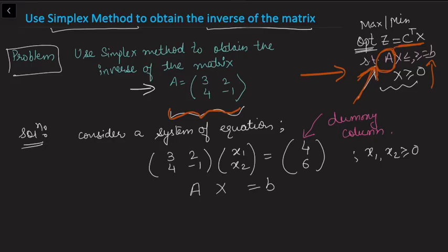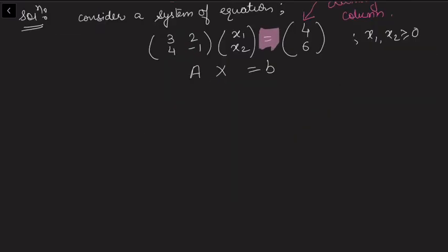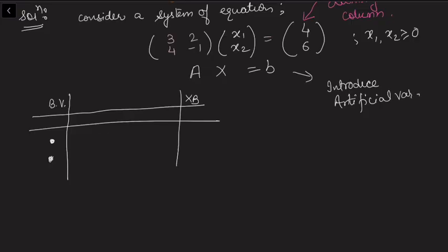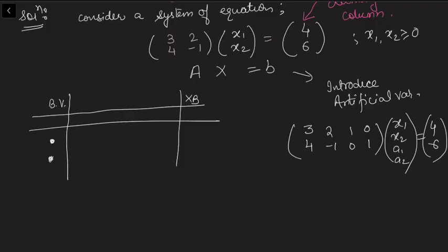We now have a system Ax = b as a constraint, and we know we can apply the simplex method to it. Notice that with an equality constraint, the associated matrix does not have a ready identity column. To construct the initial basic variable solution for the first simplex table, we need to introduce artificial variables. So we introduce two artificial variables, a1 and a2, giving us the augmented system with columns [1,0; 0,1] for the artificial variables and right-hand side [4; 6].